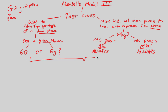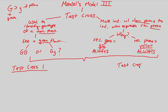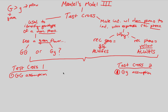I'm going to portion out space for two different crosses. I have to mate the individual with the dominant phenotype with the individual who expresses the recessive phenotype. Over here we'll do Test Cross 1, and over here Test Cross 2. We're doing two because you can assume the green plant is either capital G capital G or capital G lowercase g — those are your two assumptions going into each cross.